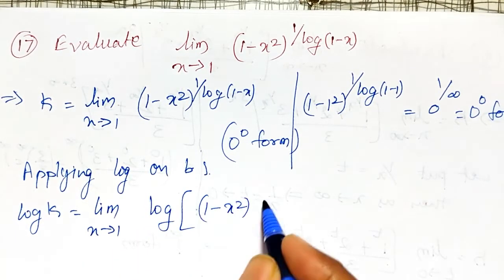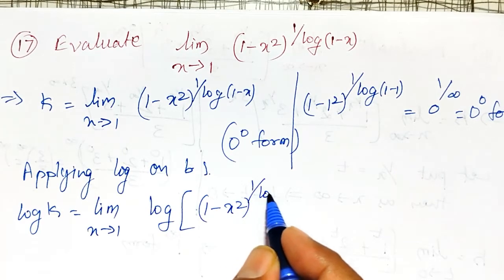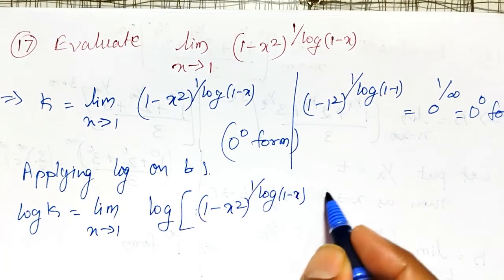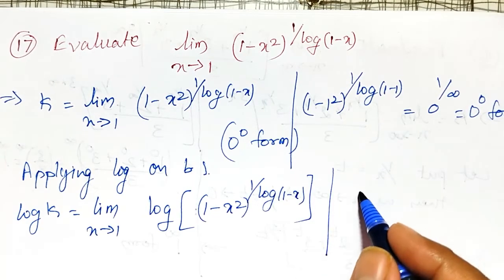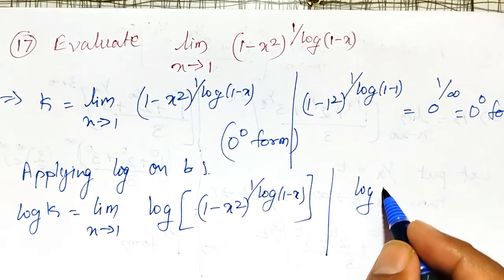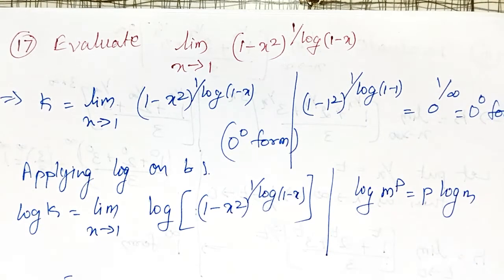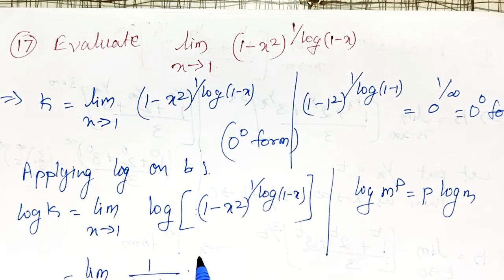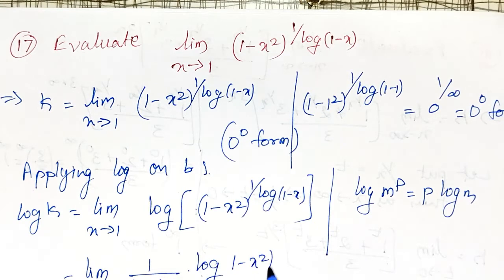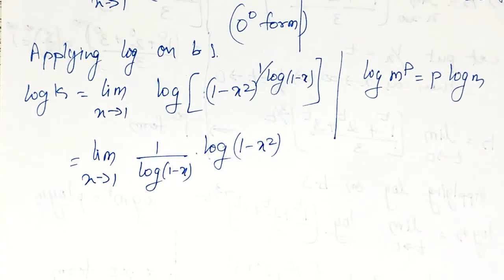(1 minus x squared) raised to 1 divided by log(1 minus x). Using the property of logarithms — log(m to the power p) equals p times log m — I can write this as the limit as x tends to 1 of 1 divided by log(1 minus x), times log(1 minus x squared).